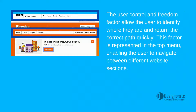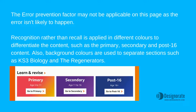The user control and freedom factor allows the user to identify where they are and return to the current path quickly. This factor is represented in the top menu, enabling the user to navigate between different website sections.